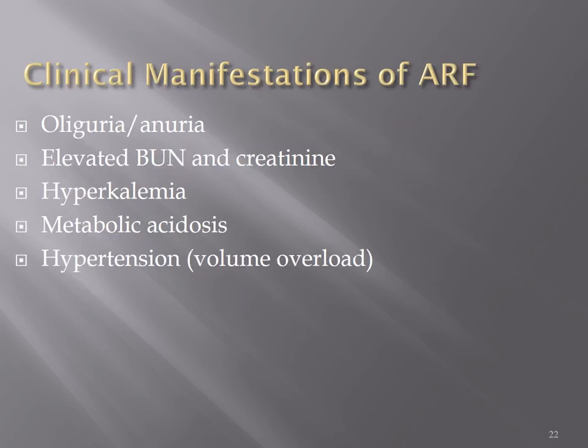Clinical manifestations of acute renal failure include oliguria, elevated BUN and creatinine, hyperkalemia, metabolic acidosis, and hypertension due to volume overload. When the kidneys fail to produce urine, all fluid backs into the circulation, causing hypertension. This becomes a major systemic disorder.